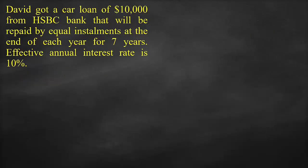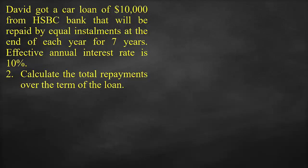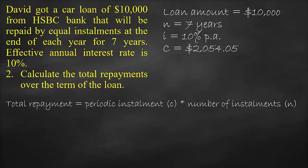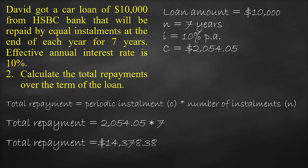The next part of the question is to calculate the total repayments over the term of the loan. We pay a periodic instalment every year for 7 years. Therefore, the total repayments — also called total instalments or total debt service — equal the periodic instalment C times the number of instalments N. So total repayments equal $2,054.05 times 7, which equals $14,378.38.